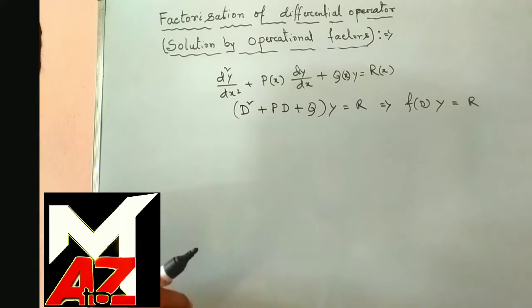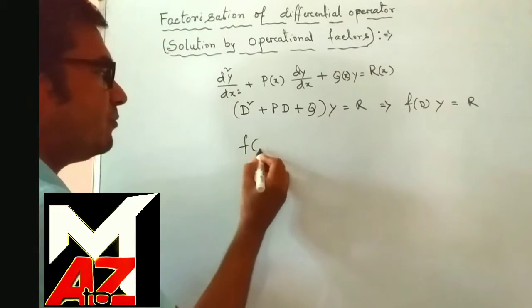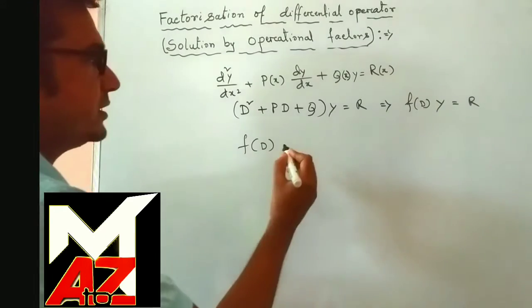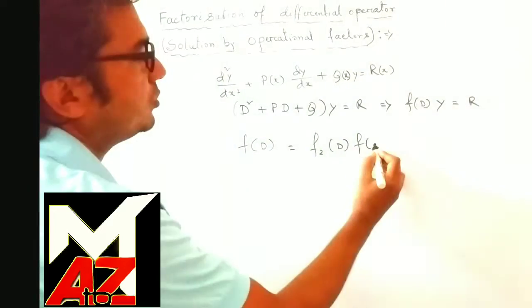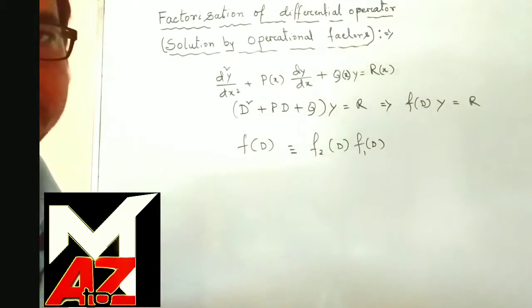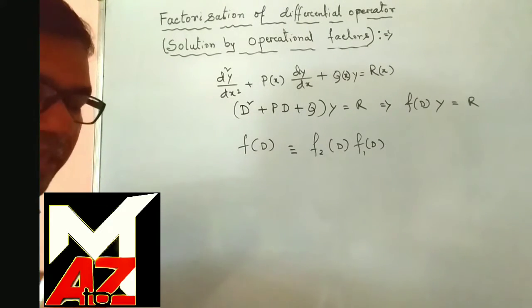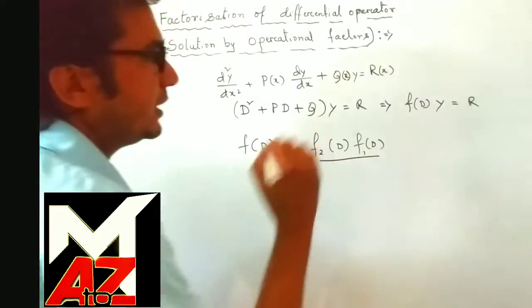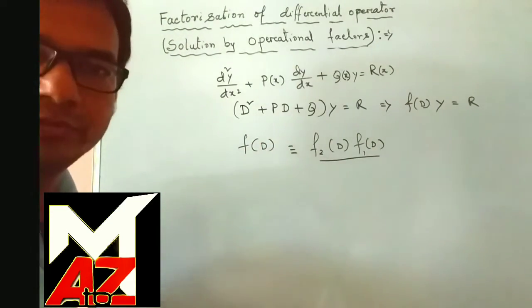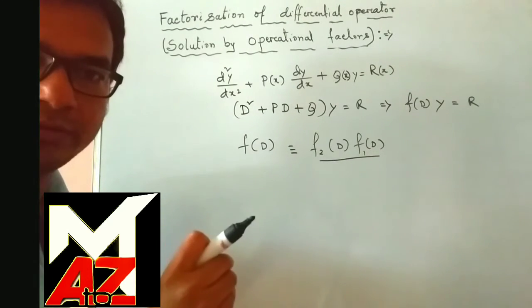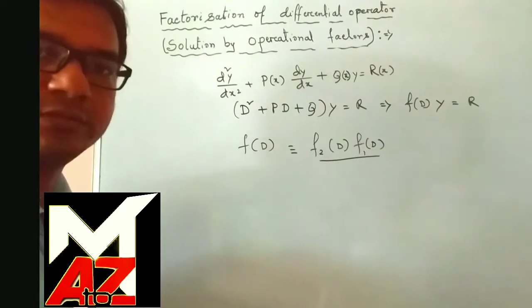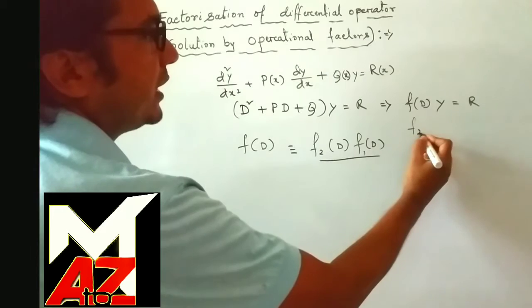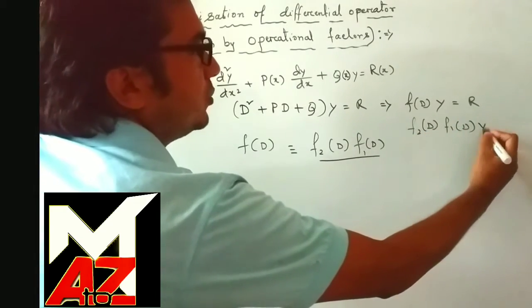Now, sometimes — not in all cases — sometimes f(D) can be factorized as f₂(D)·f₁(D). It is important to note that this product is not always commutative, so we must operate from the right side of the operator. The equation then becomes f₂(D)·f₁(D)·y = r.